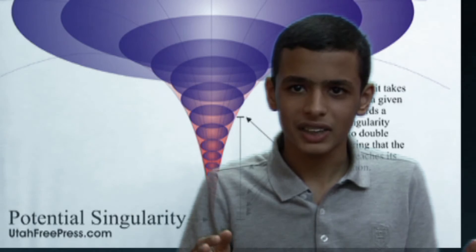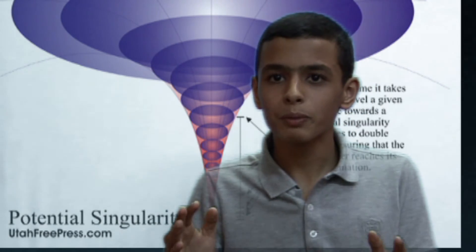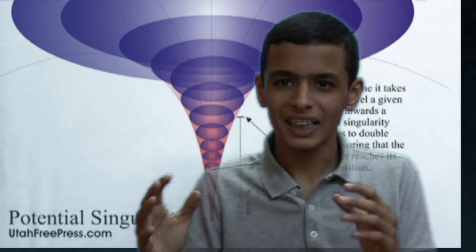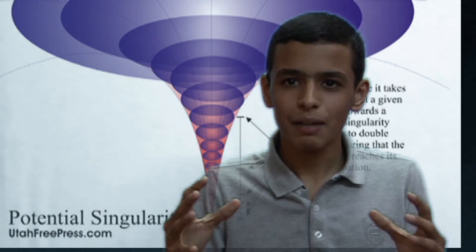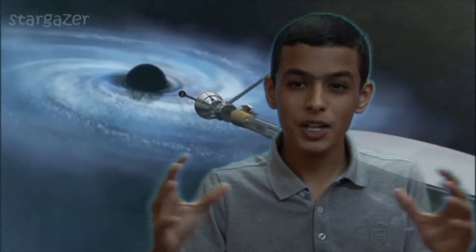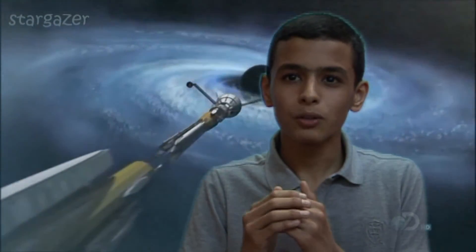Another layer is singularity, a single point where huge mass is concentrated in an infinitely small space, where gravity and density become infinite and space-time curves infinitely. In fact, when you fall into a black hole, gravity would stretch you like spaghetti. The process is called spaghettification.